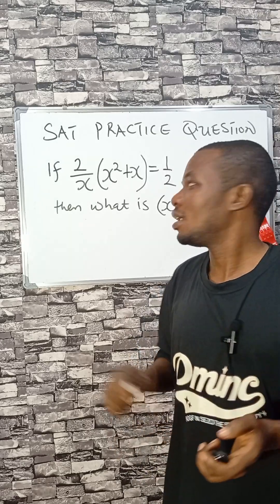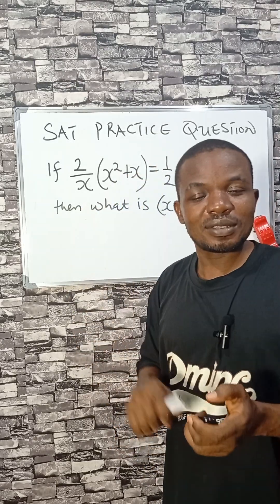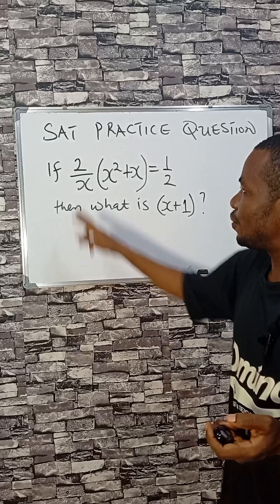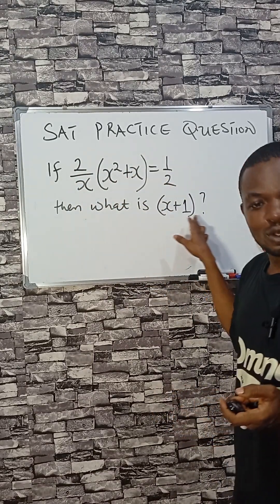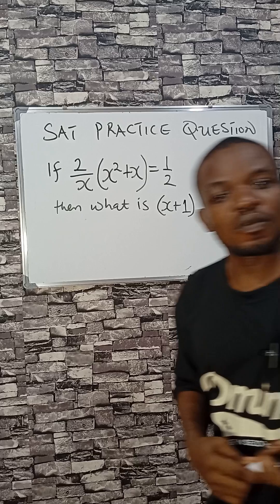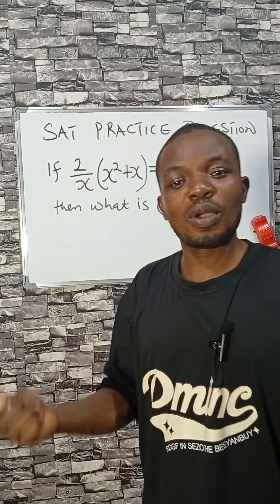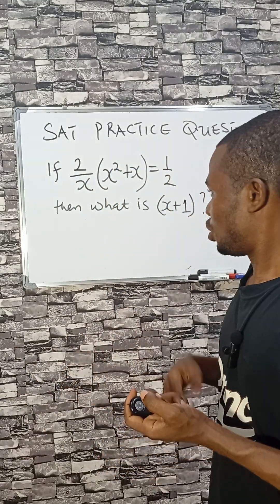This is an SAT practice question. If 2 divided by x times this bracket equals to a half, then x plus 1 equals to what? I will solve this in two ways. Whichever way you like, you choose that one.